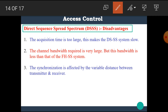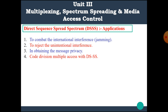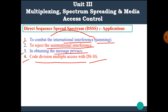Let's see some disadvantages of the system. First, the acquisition time is too large, making the DSSS system slow. Second, the channel bandwidth required is very large, though less than that of the FHSS system. Third, synchronization is affected by variable distance between transmitter and receiver. Applications include: combating intentional interference or jamming, rejecting unintentional interference, and obtaining message privacy in code division multiple access using DSSS.